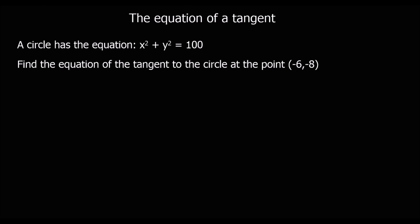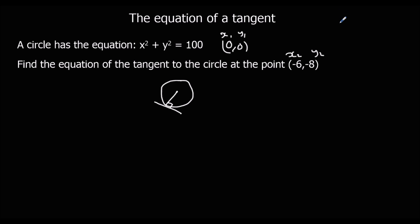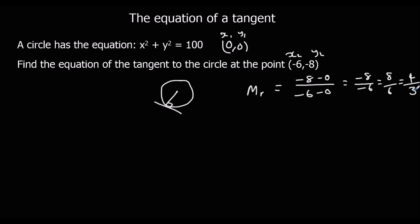Finally, one more example. Why don't you pause the video and give this one a go? If not, we'll do it together. We've got our circle with center (0, 0), and the point is (-6, -8). The gradient of the radius: using (y2 - y1) over (x2 - x1), that's -8 minus 0 over -6 minus 0, giving -8 over -6, which simplifies to 8/6, or 4/3. So the gradient of the radius is 4/3.